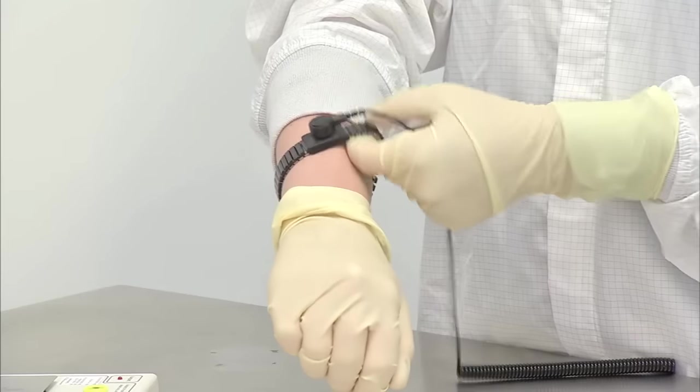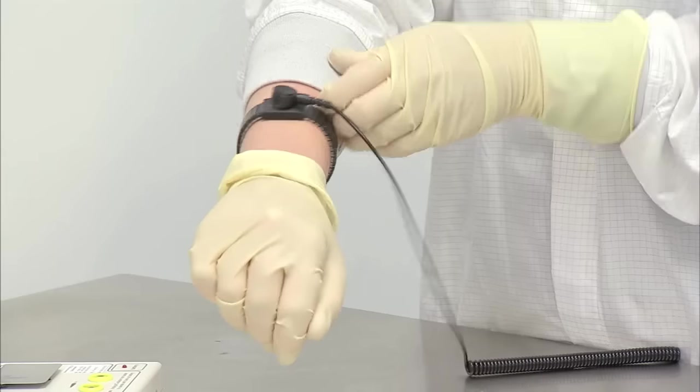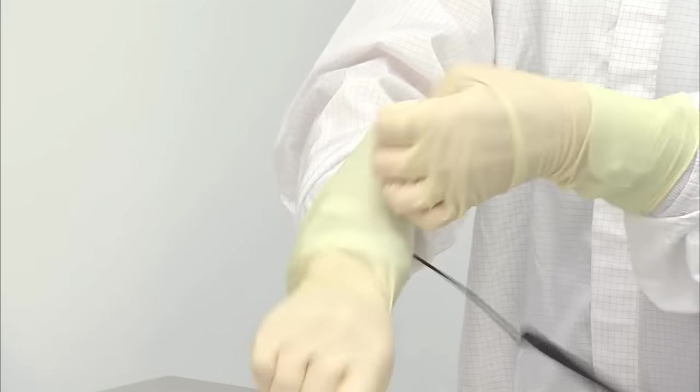If you are required to wear an electrostatic discharge, or ESD, wrist strap, the ESD strap must be worn on your wrist under both the garment sleeve cuff and the glove gauntlet.